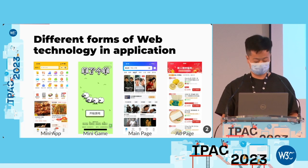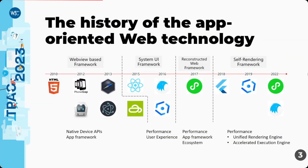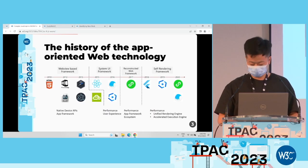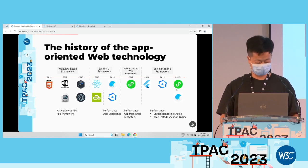Web technology has been widely used in many applications. As you can see, the main pages of applications are developed by web technology, and some of the experience of the web pages is close to native. Here you can see the history of application-oriented web technology. Firstly, web focused on enriching device APIs and improving application frameworks.